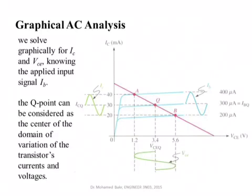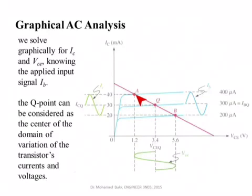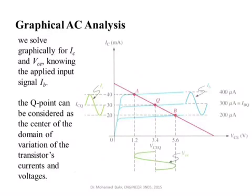The load line represents the external equation governing VC and IC. Intersecting it with the characteristic curve gives the operating point Q. When we allow I_base to oscillate around its operating point, if I_base increases we move along the load line toward point A; if I_base decreases we move toward point B. Notice that when IB goes up, VC goes down, and when IB goes down, VC goes up — confirming the 180-degree phase shift.